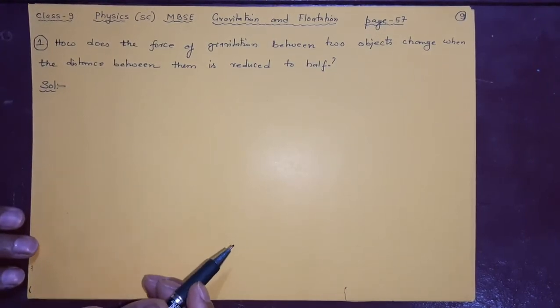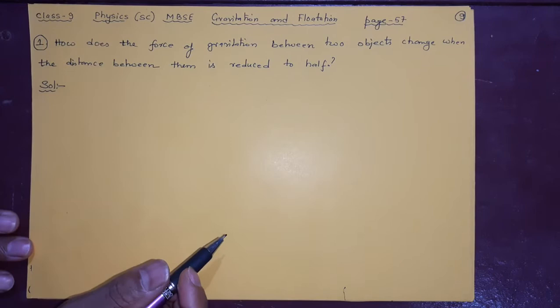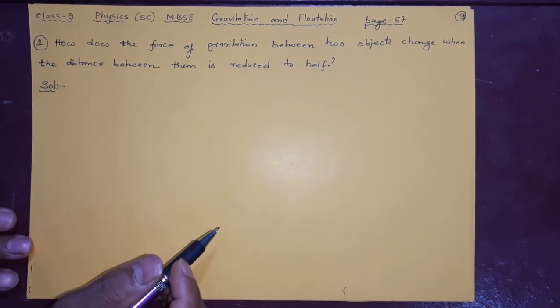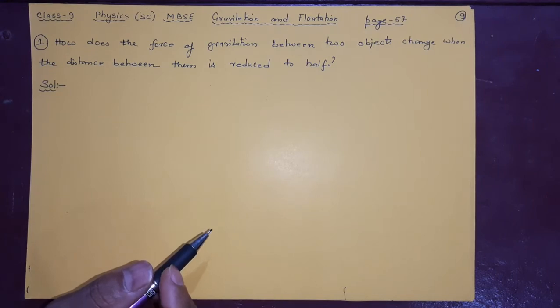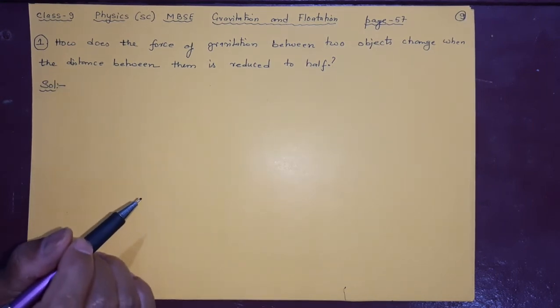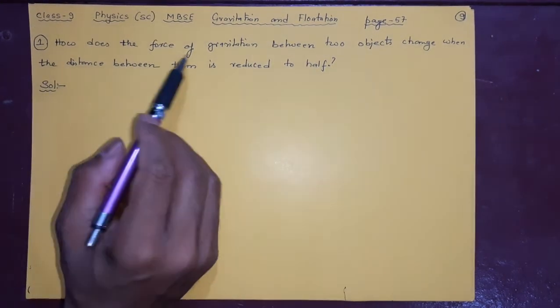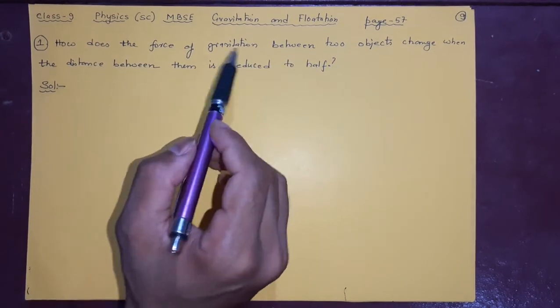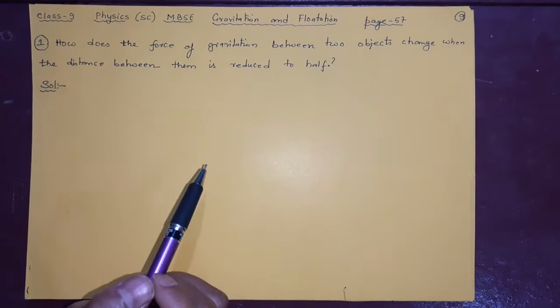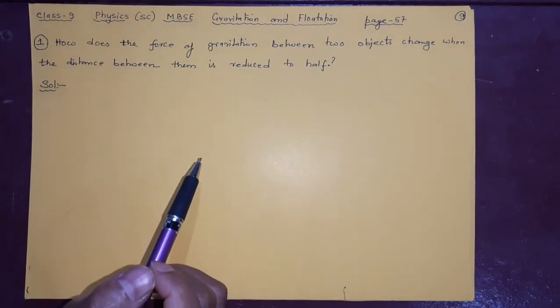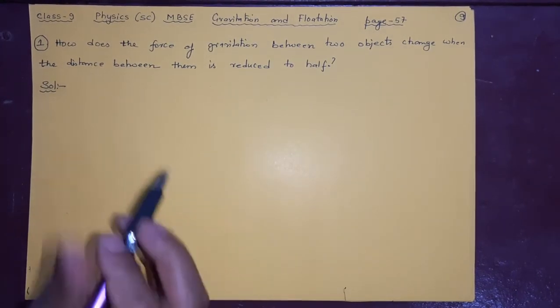Welcome viewers to the SD online classes. Today we are going to continue this gravitation and flotation chapter of class 9 MBSC syllabus, page number 57 in your textbook. The question reads like this: there's a numerical question based on gravitation. How does the force of gravitation between two objects change when the distance between them is reduced to half?